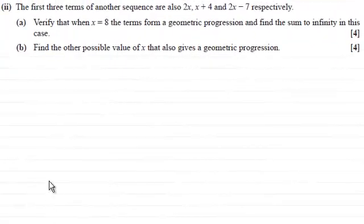Hi there. Now we're given that the first three terms of another sequence are also 2x, x plus 4, and 2x minus 7 respectively.